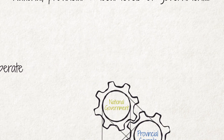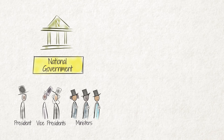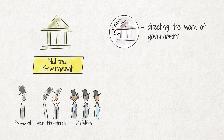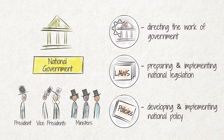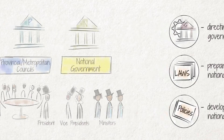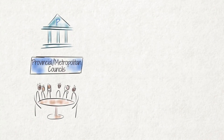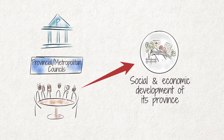The national executive is responsible for directing the work of government, preparing and implementing national legislation, and developing and implementing national policy. A provincial or metropolitan council is responsible for the social and economic development of its province.